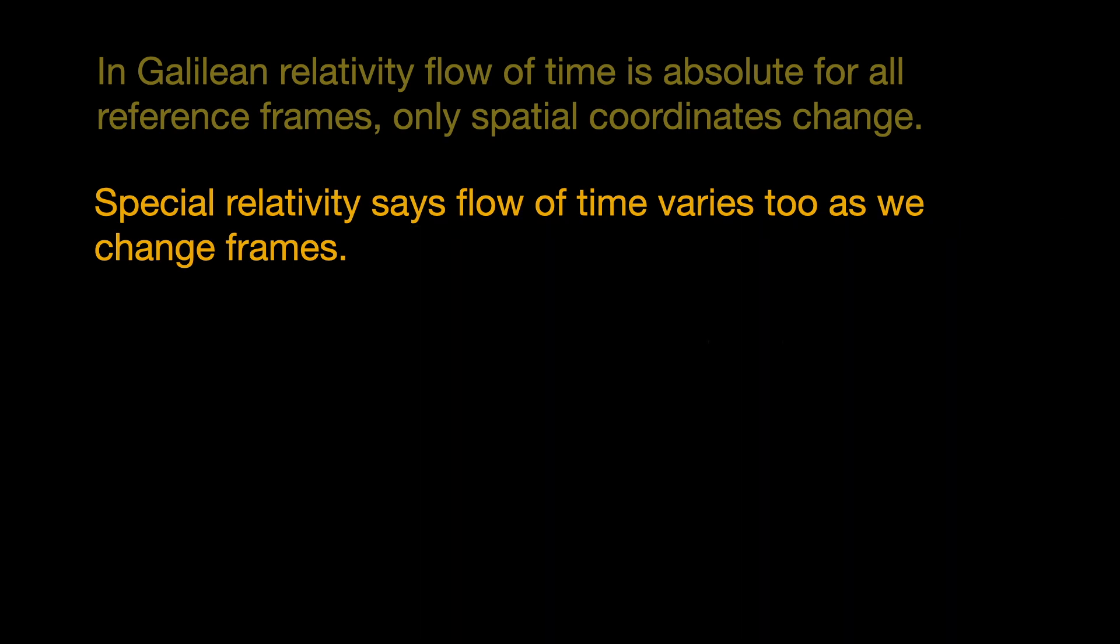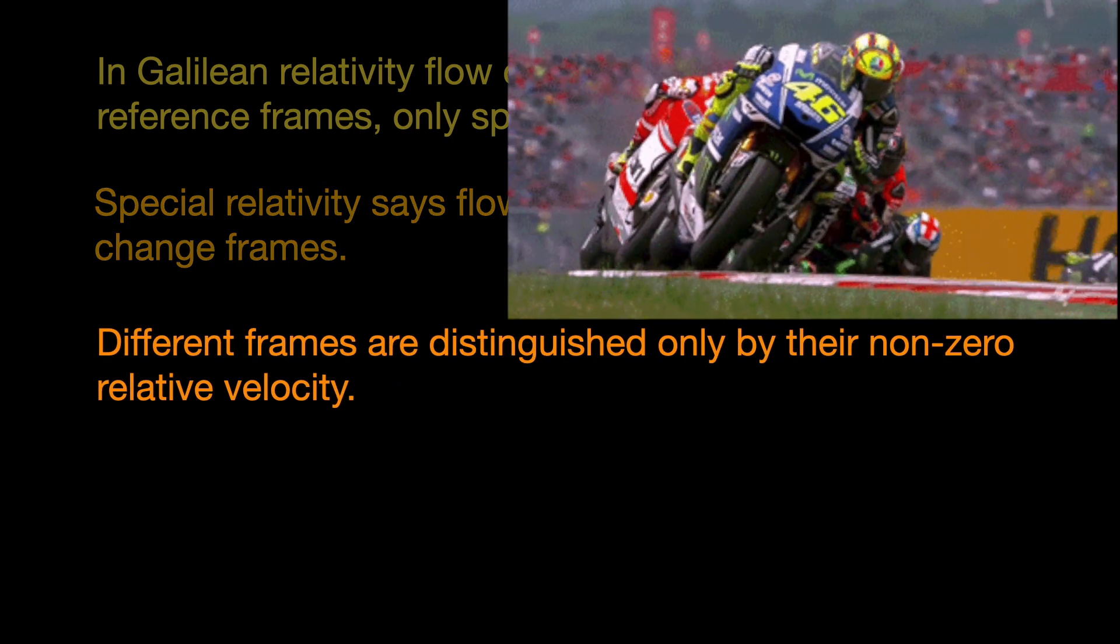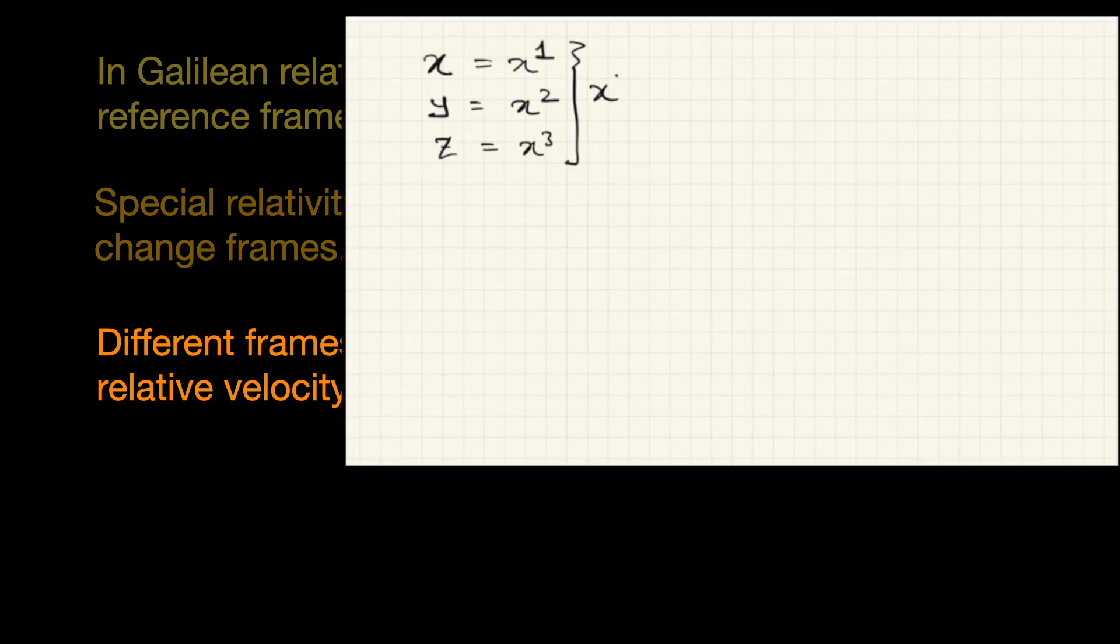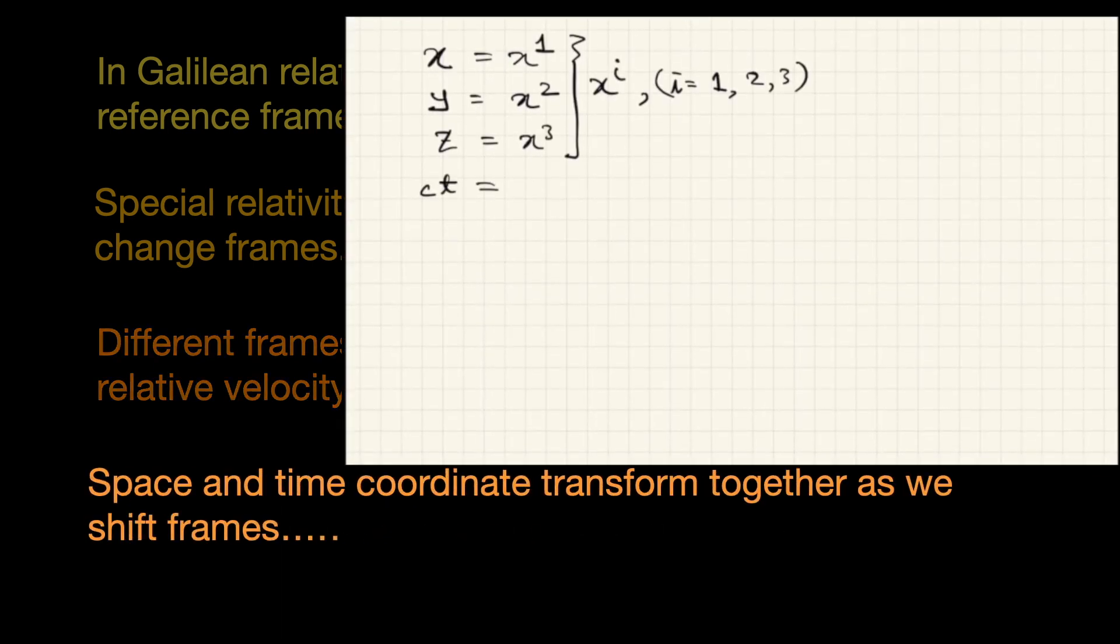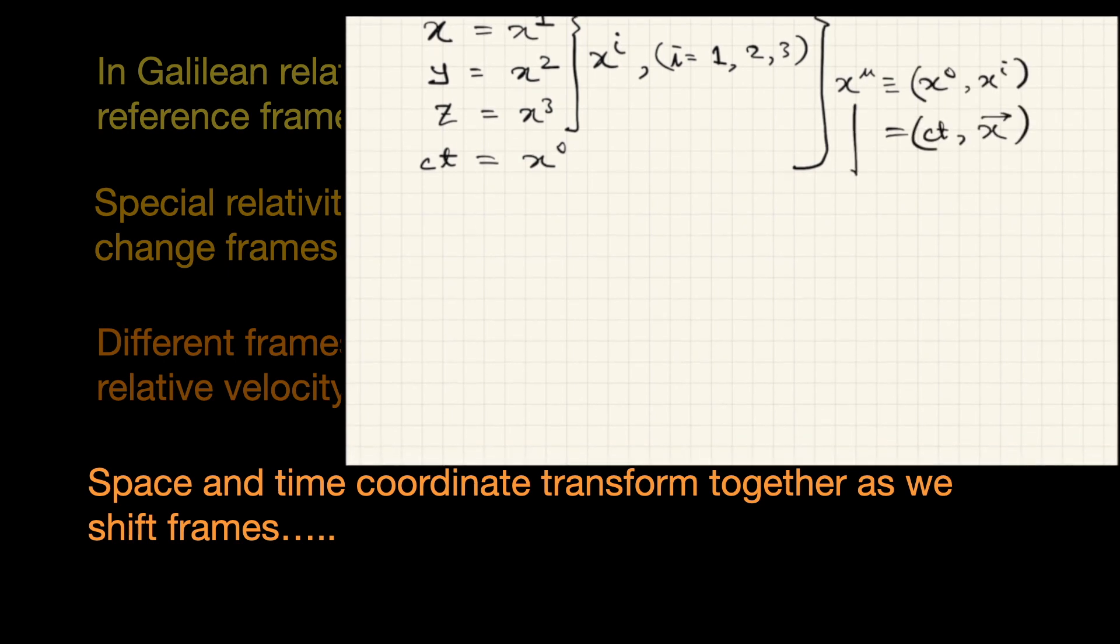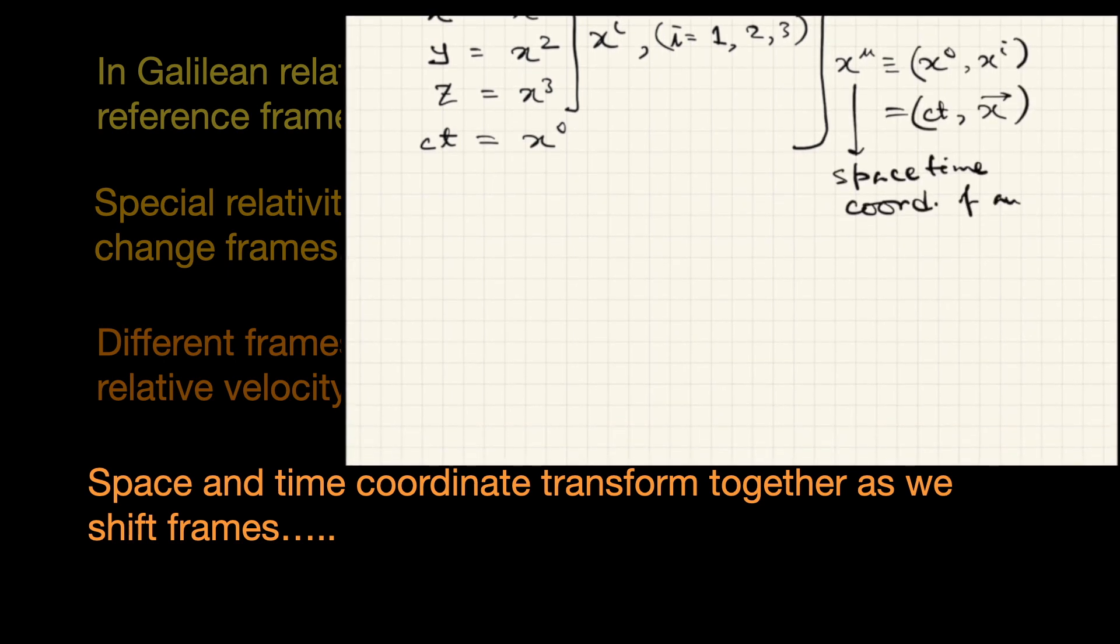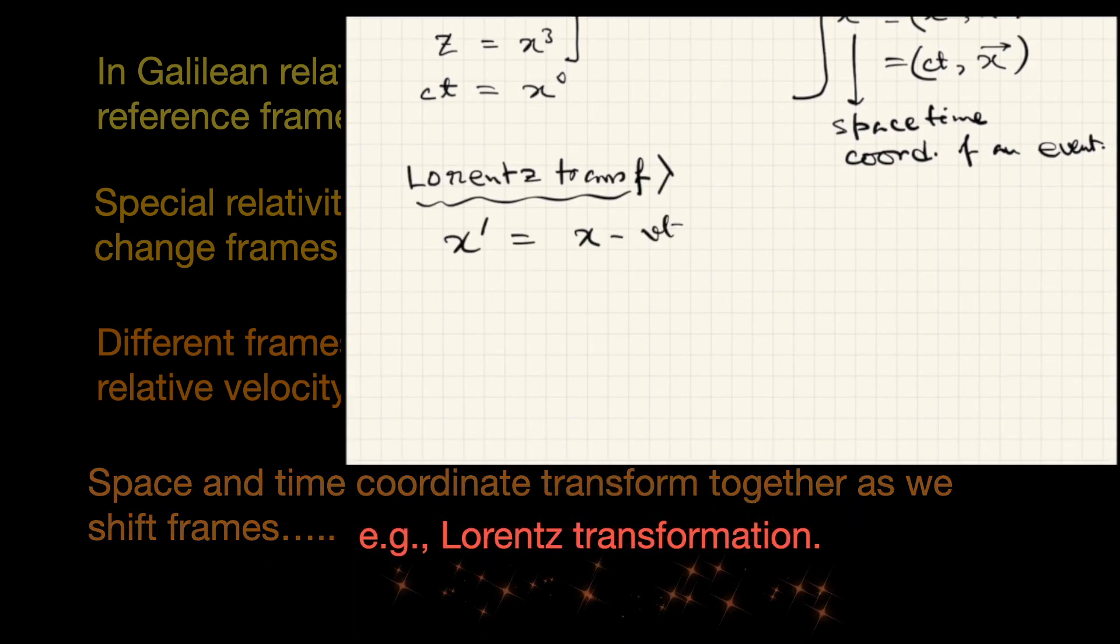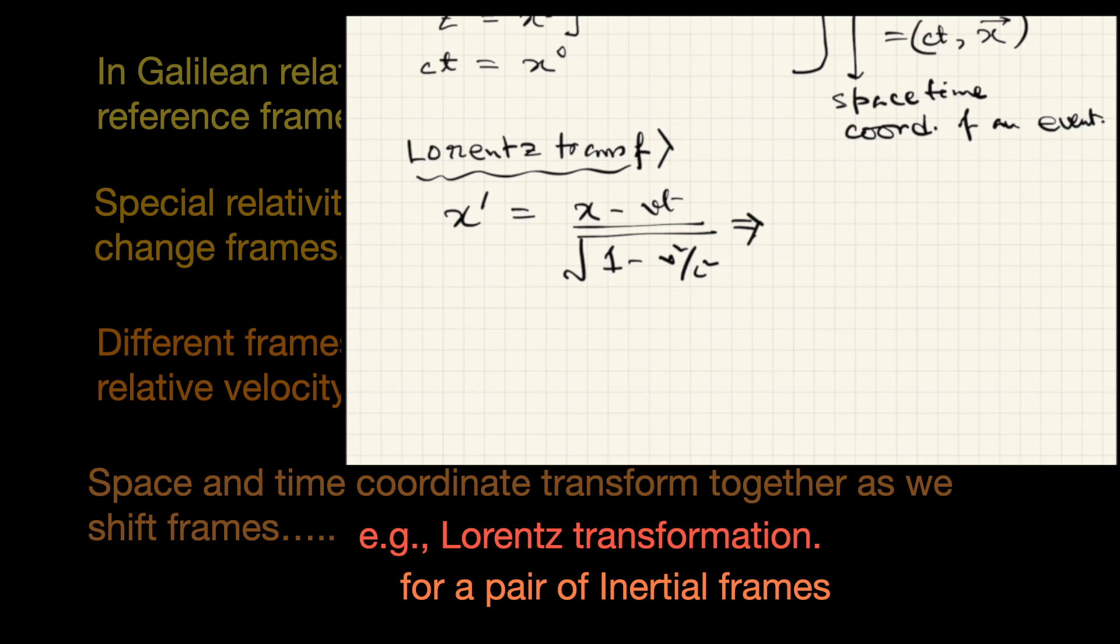By the way, two frames of reference are distinguished by their relative velocity only. We have discussed this extensively in some earlier videos. Anyway, this new development meant one has to transform time coordinates too along with the spatial coordinates when shifting from one reference frame to another. The most famous is of course, Lorentz transformation that relates space and time coordinates of two inertial frames.